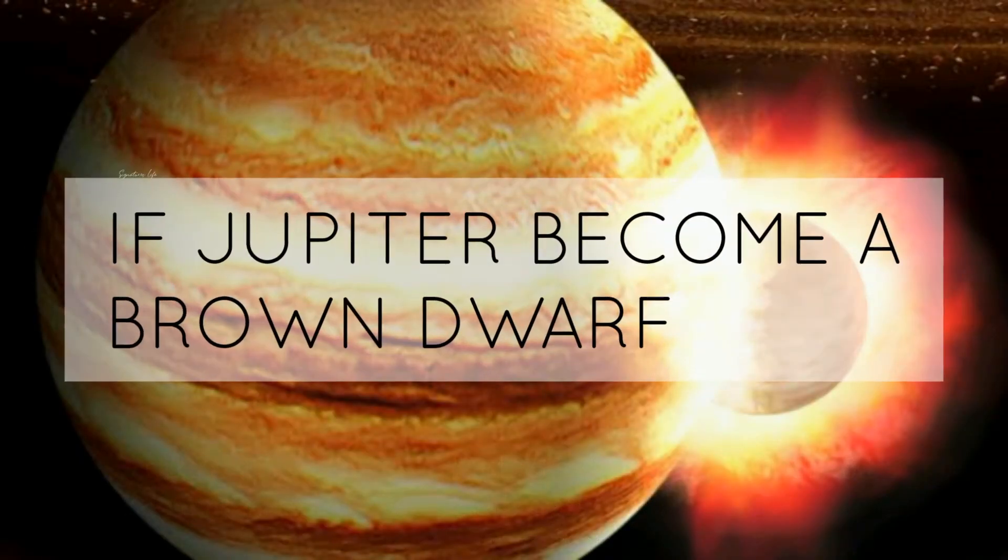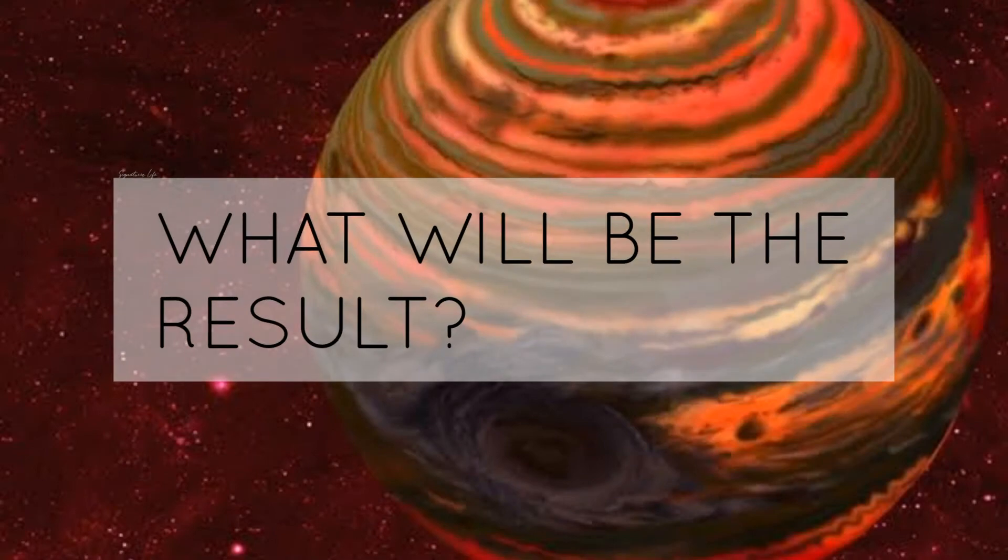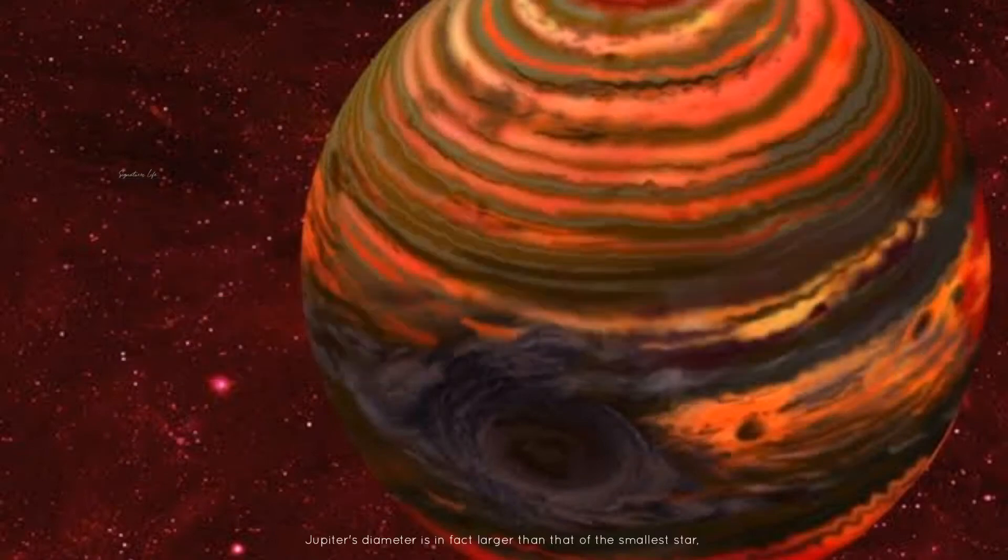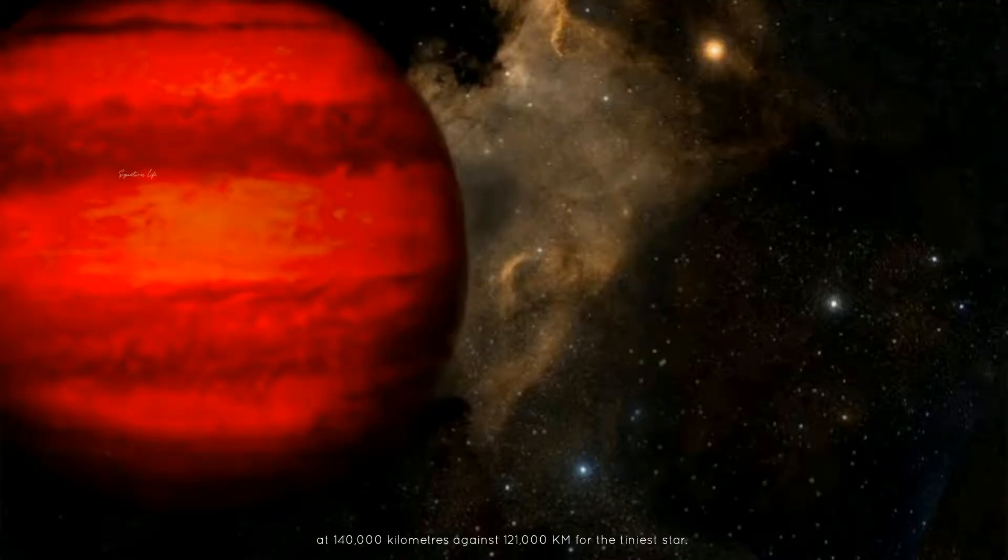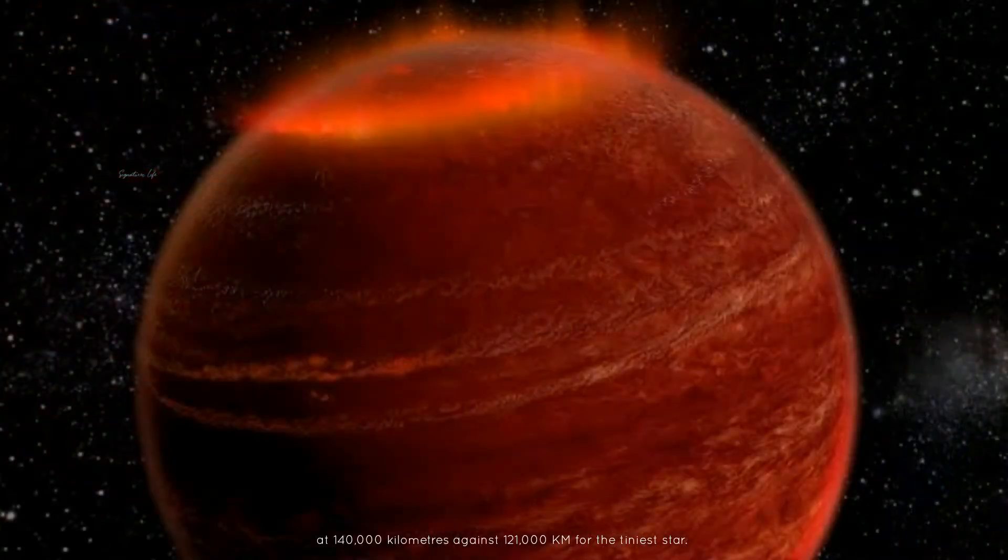If Jupiter became a brown dwarf, what would be the result? Jupiter's diameter is actually larger than that of the smallest star at 140,000 km against 121,000 km for the tiniest star.